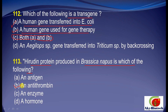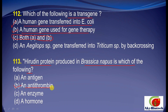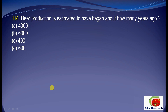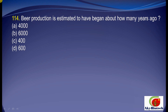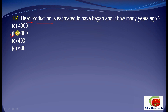Question 13: The correct option is antithrombin. Question 14: Beer production is estimated to have begun about how many years ago? The correct option is B — 6000 years ago.